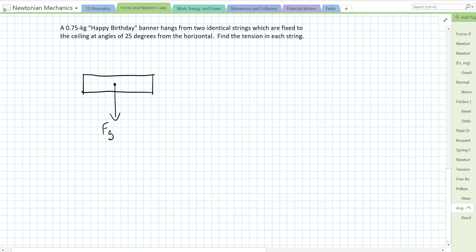We have the force of gravity pulling down, equal to mg, and we have two strings that are at 25 degrees from the horizontal. So if this is our horizontal, we're 25 degrees, so it's going to be something like this is our tension force, and then we have another one in the opposite direction.